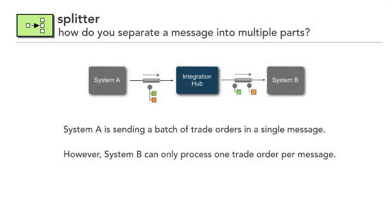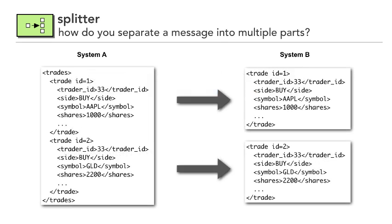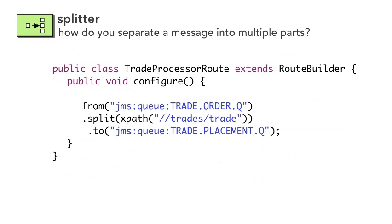Let's look at the third pattern: a splitter. How do you separate a message into multiple parts? System A is still sending a basket or batch of trades in a single XML message. However, System B has been modified — a new system that can only do one trade per message; it can't handle a basket or batch. The integration hub handles the split. The code: from the trade order queue, I do a .split based on an XPath statement of each trade in the trades element, and for each trade found, send it to the trade placement queue. That split is really just a DSL — you can see why I really like Apache Camel; it's very intuitive and easy.